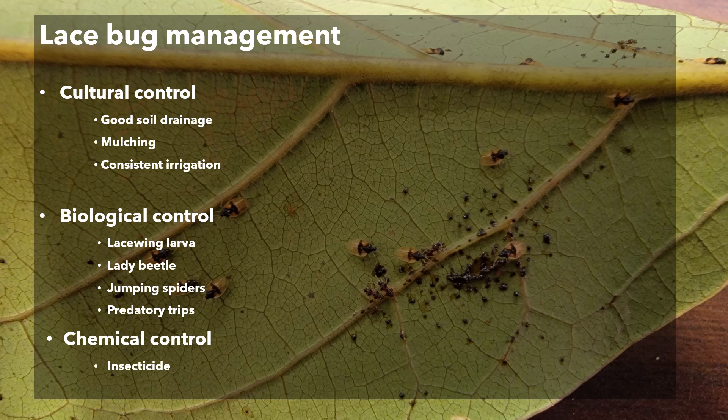Natural enemies are very important in controlling some species of lace bug. Predators of lace bugs include lacewings, larvae, lady beetles, jumping spiders, and predatory thrips. Some of these predators may become commercially available.